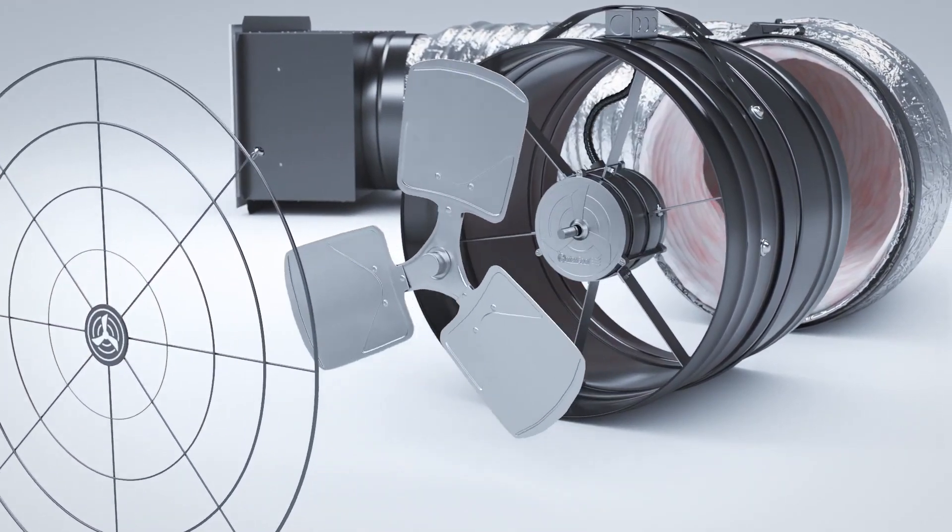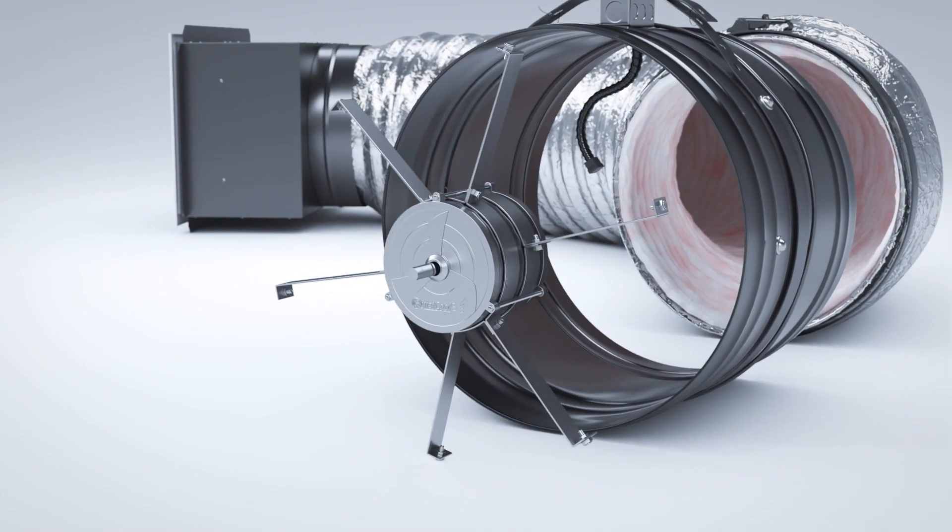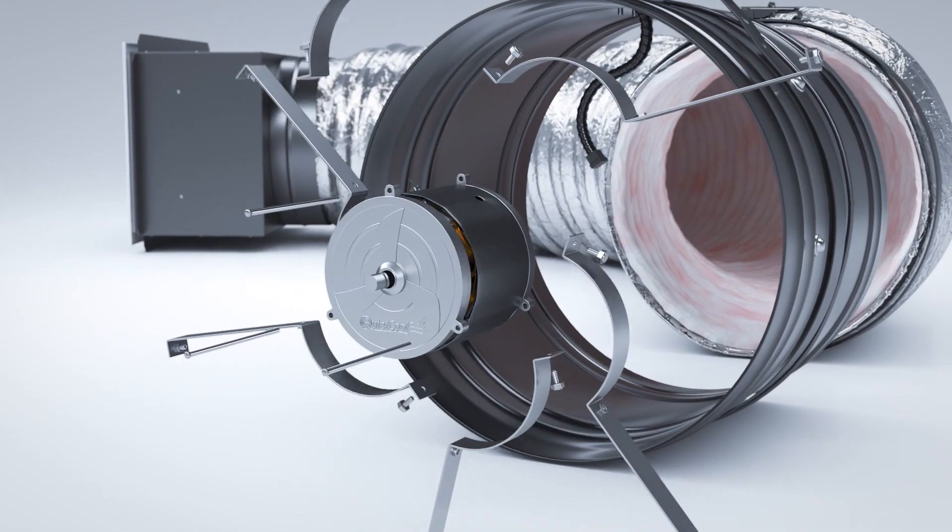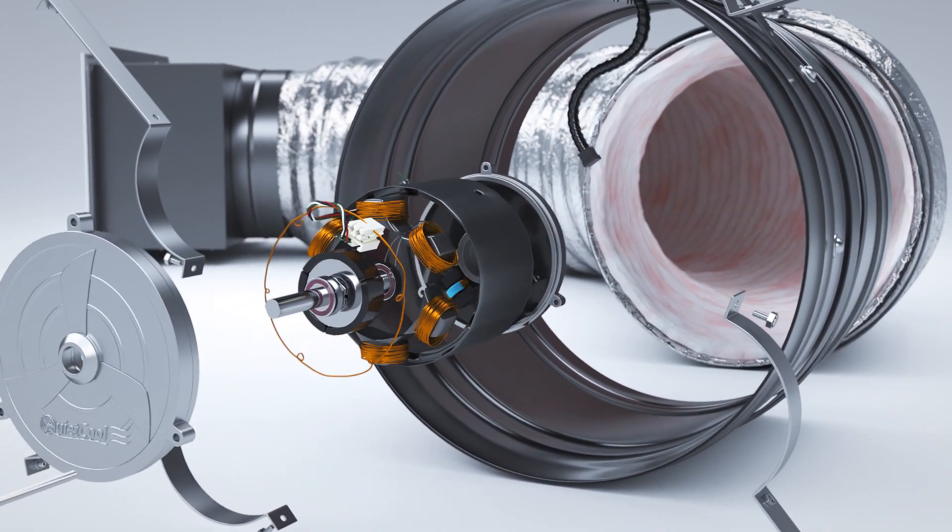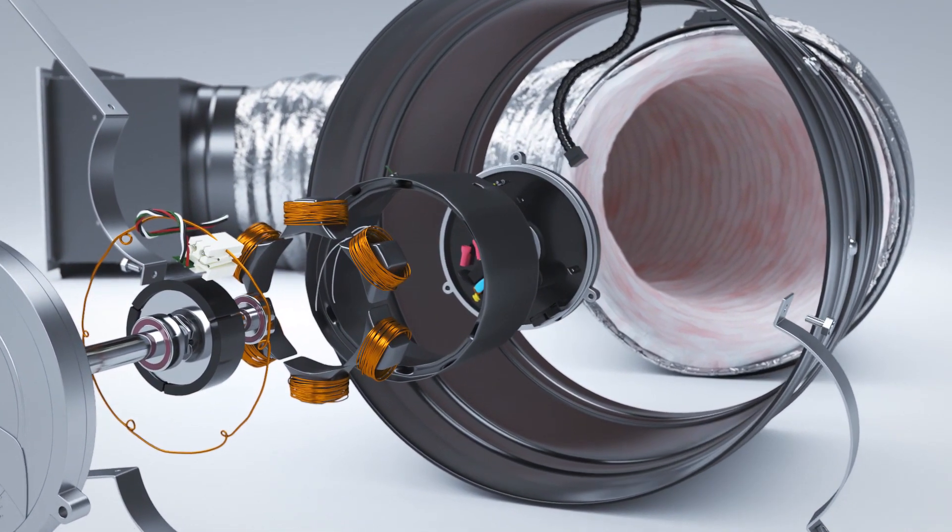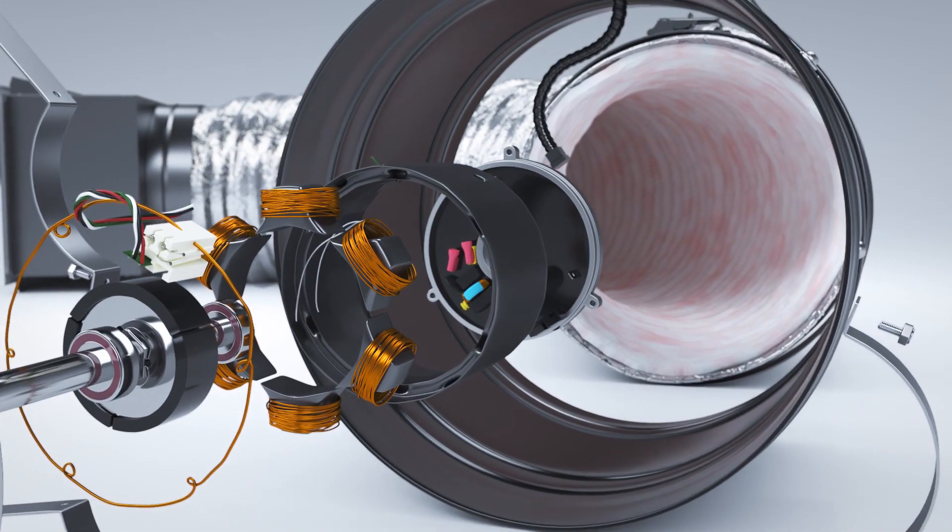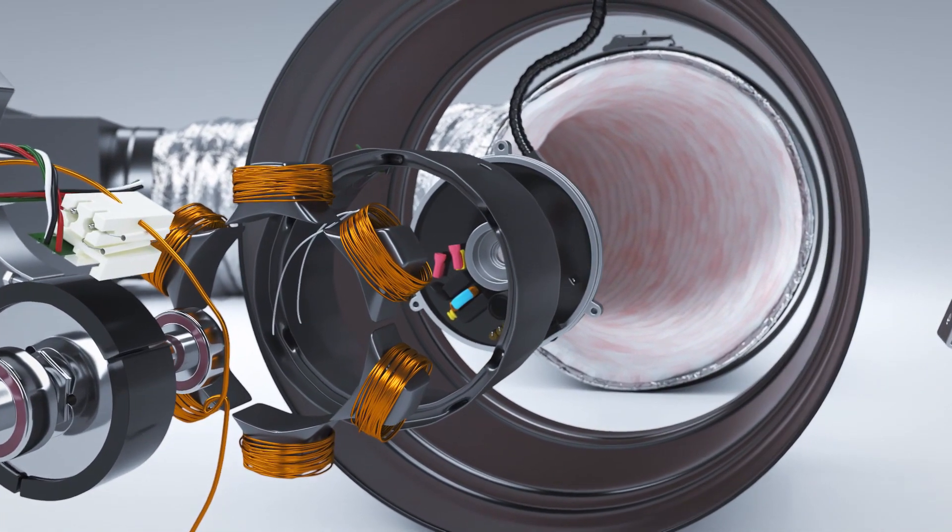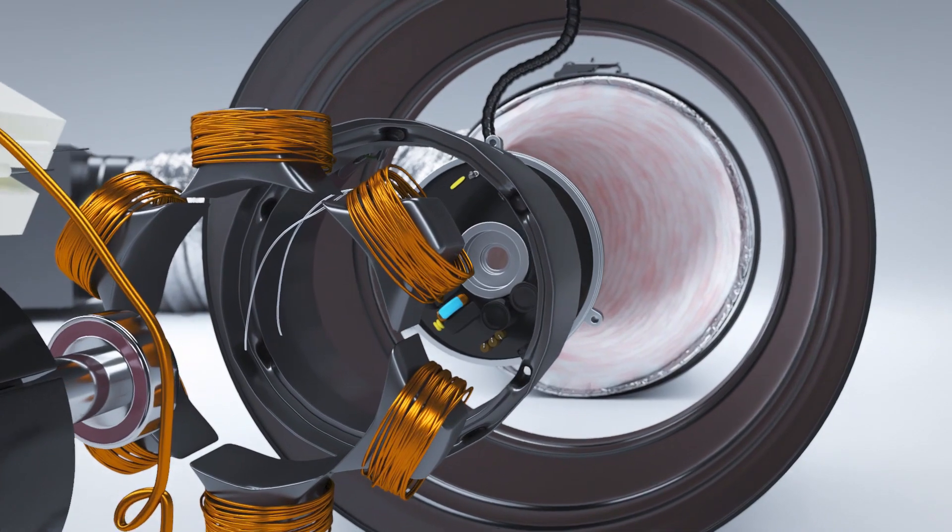The Stealth Pro is powered by an ultra-energy efficient ECM, which is one of the most intelligent and effective on the market today. It is the brain inside of the Stealth Pro and allows the fan to run at optimum efficiency.